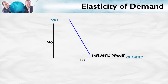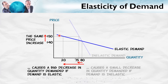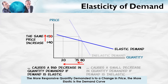Here's an example. Let's start with this demand curve, which is an inelastic demand curve. Notice that when the price increases from $40 to $50, the quantity demanded goes down by just a little — by 5 units, from 80 units to 75 units. Now consider an elastic demand curve. The same $10 increase in price now reduces the quantity demanded from 80 units to 20 units. On the elastic demand curve, the quantity demanded is much more responsive to price. When quantity demanded is responsive to price, that's elastic demand; when it's less responsive, that's inelastic demand.